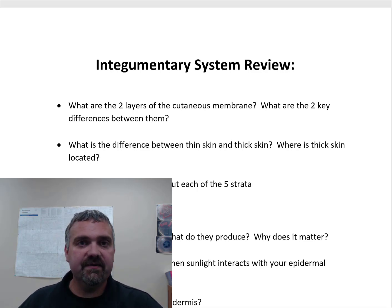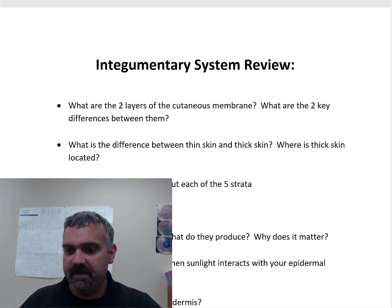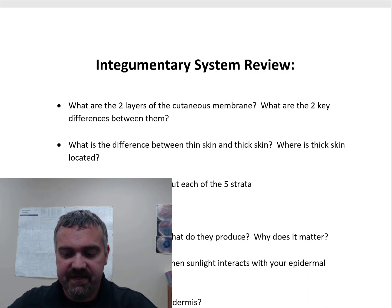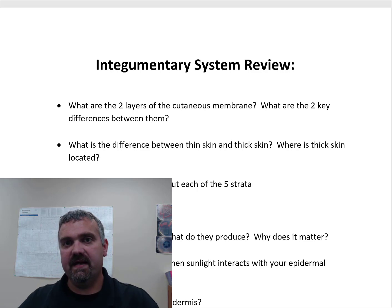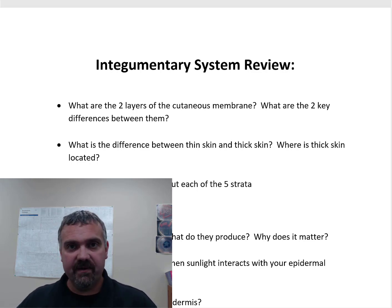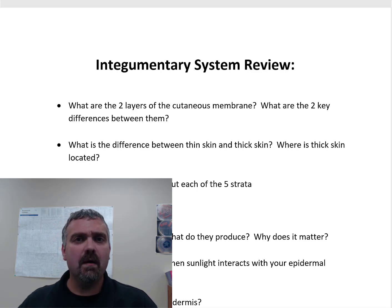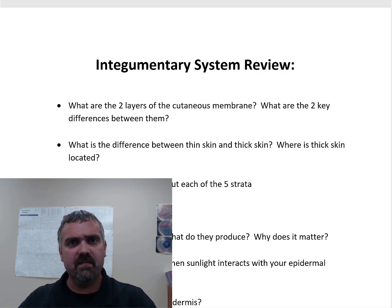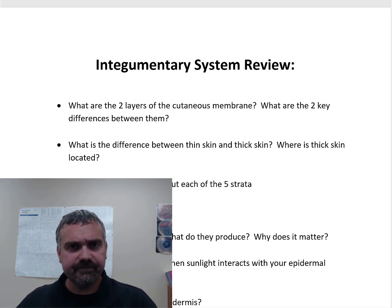What are the two layers of the cutaneous membrane, also known as your skin, and what are the two key differences between them? Your cutaneous membrane is going to be the epidermis and the underlying dermis. You also have a hypodermis — you've probably heard the term hypodermic needle. It's usually called the subcutaneous layer, meaning it's below the cutaneous membrane. That's primarily fat, adipose tissue.